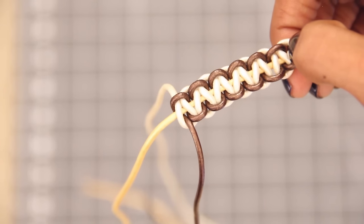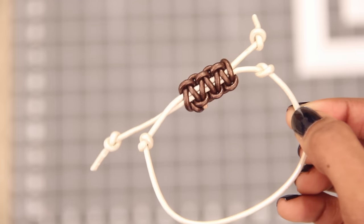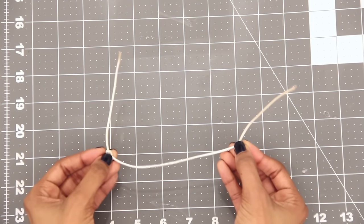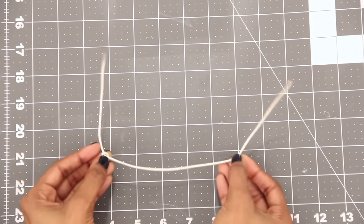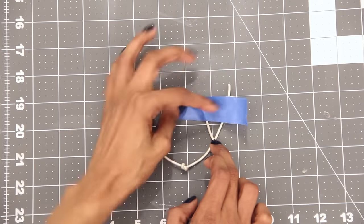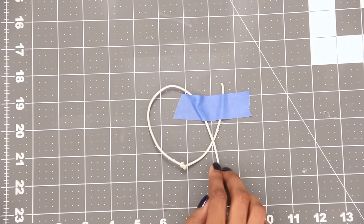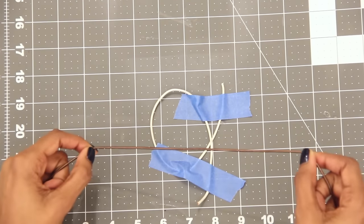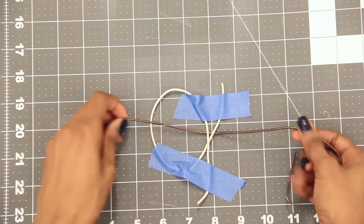I also want to show you how to use a square knot to create a sliding closure for bracelets. Let's pretend like this cord is a bracelet. First, cross the ends of the bracelet, then tape it off so that it won't move while you work on it. Take another piece of cord that's at least 10 inches long and slide it under both ends of the bracelet.